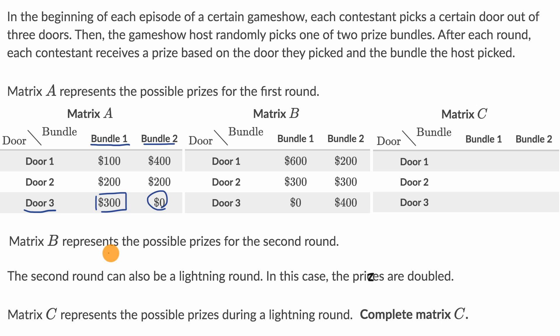Matrix B represents the possible prizes for the second round. The second round can also be a lightning round. In this case, the prizes are doubled. Matrix C represents the possible prizes during a lightning round. Complete matrix C.